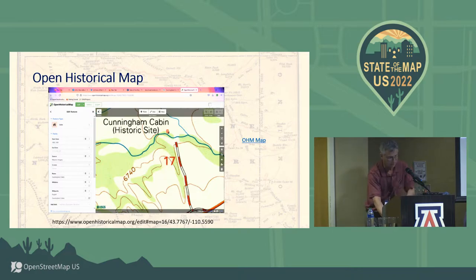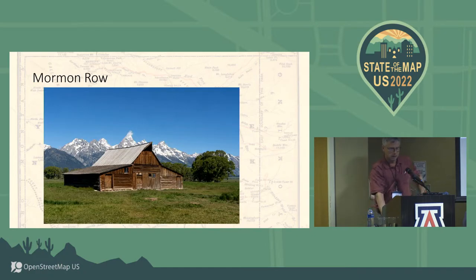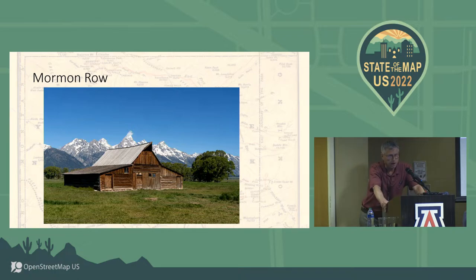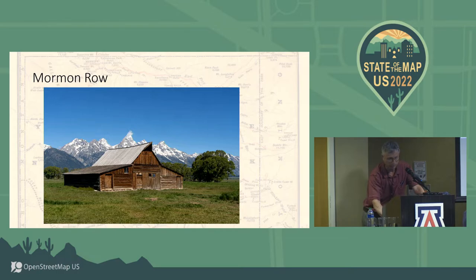There are some other interesting historical features in the area. This is probably the most photographed barn in the country, and it's easy to see why with the beautiful mountains in the background. It's on the TA Moulton Ranch, which is part of an area known as Mormon Row, now part of the national park. It was built in 1916 and is still standing, so it was pretty easy to add to the map — and it's also on OpenStreetMap.